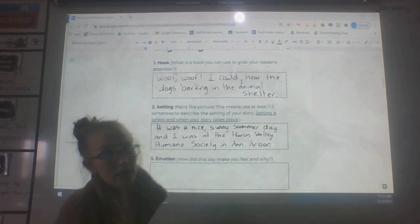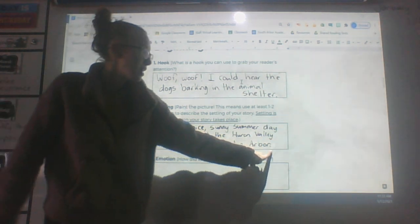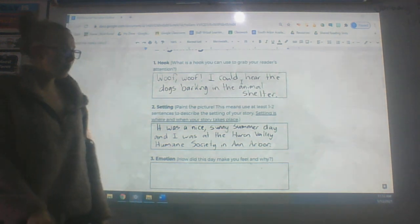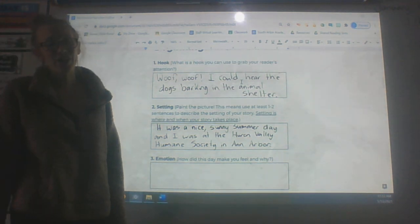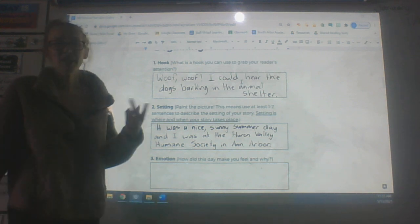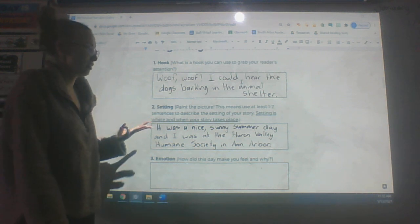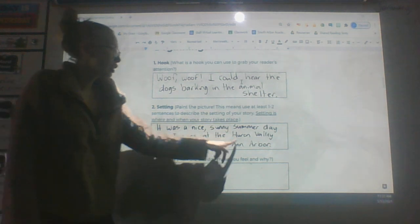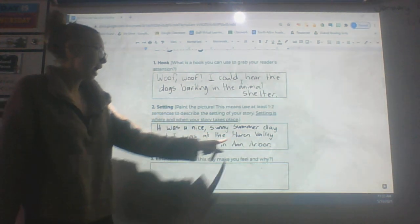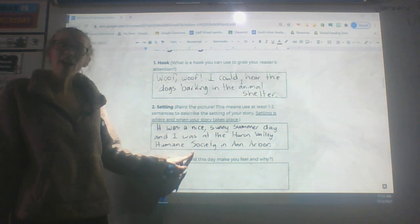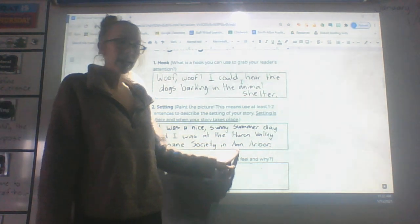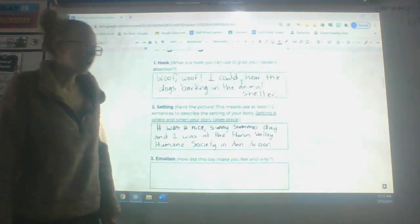Also, if you're looking, you might notice I have a lot of words capitalized. That's because I used a lot of proper nouns. That means a person, place, or thing and the name of that person, place, or thing. So I used Huron Valley Humane Society. I made sure to capitalize that because that is the name of the animal shelter. And then I also capitalized the city, Ann Arbor.